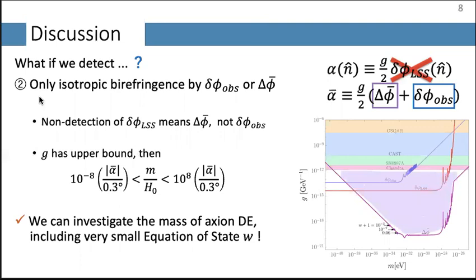Next, let me consider the case where we detect only isotropic birefringence — from background motion or observer fluctuations — but no anisotropic birefringence. The non-detection of anisotropic birefringence means the isotropic birefringence comes from the background motion, since the anisotropic birefringence and observer fluctuation would have comparable contributions. Since the coupling constant has an upper bound, we can put a length constraint on the mass range, corresponding to the purple region in the figure. Other than this purple region, the existence of axions is already excluded by other experiments. So we can investigate the mass of extremely light axions using birefringence.